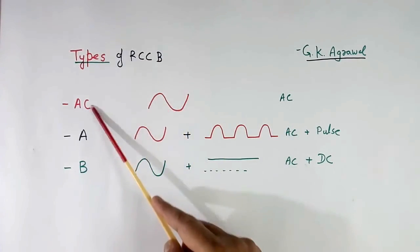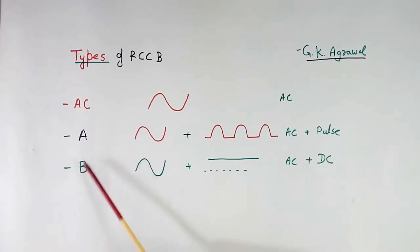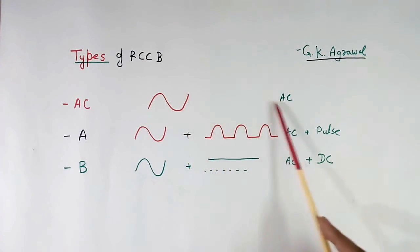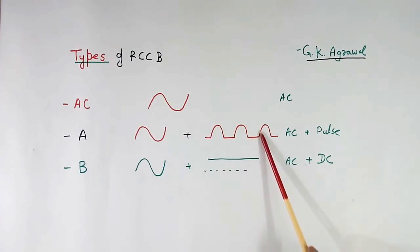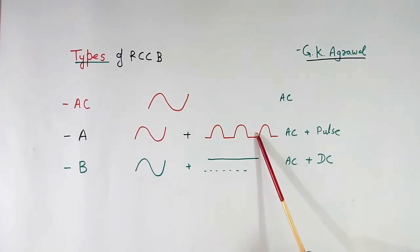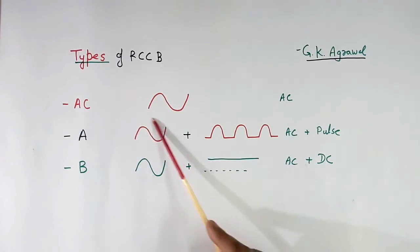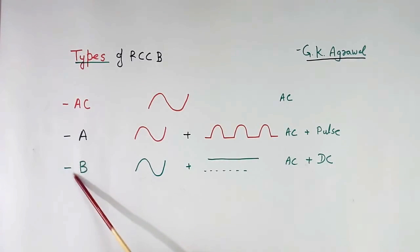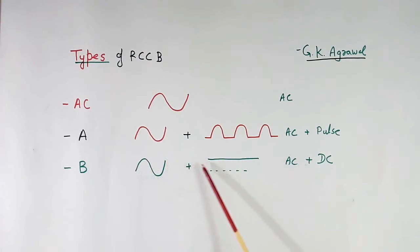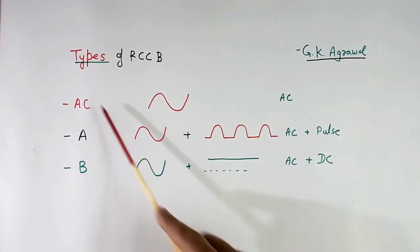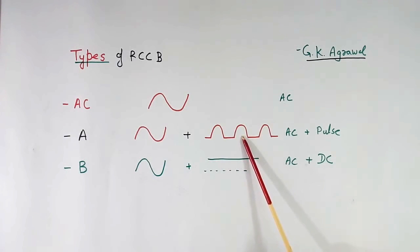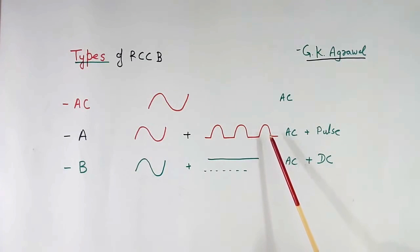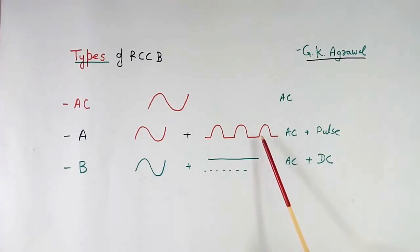Now, types of RCCB. Mainly there are 3 types: AC, A, and B. AC type RCCB is sensitive for AC current only. A type is sensitive for AC current plus pulse current — this pulse type current will be there when there is a rectifier, inverter, or some thyristor connected. B type RCCB is sensitive for AC as well as pure DC. In our home, generally AC types are used. But in labs or where inverters, converters, or thyristors are present, A type should be used.